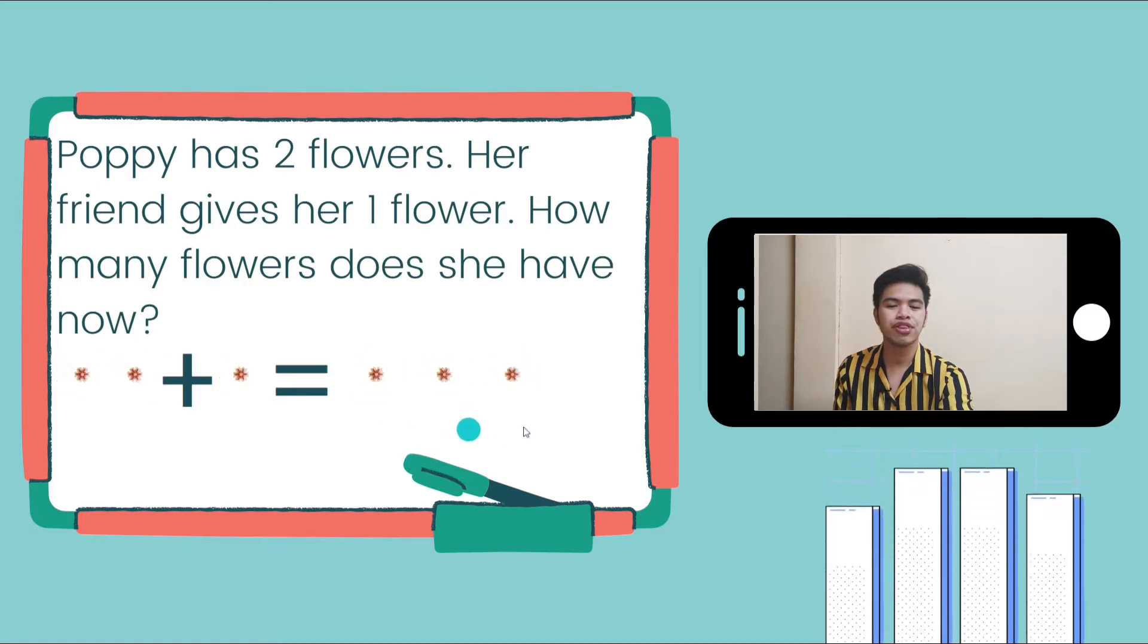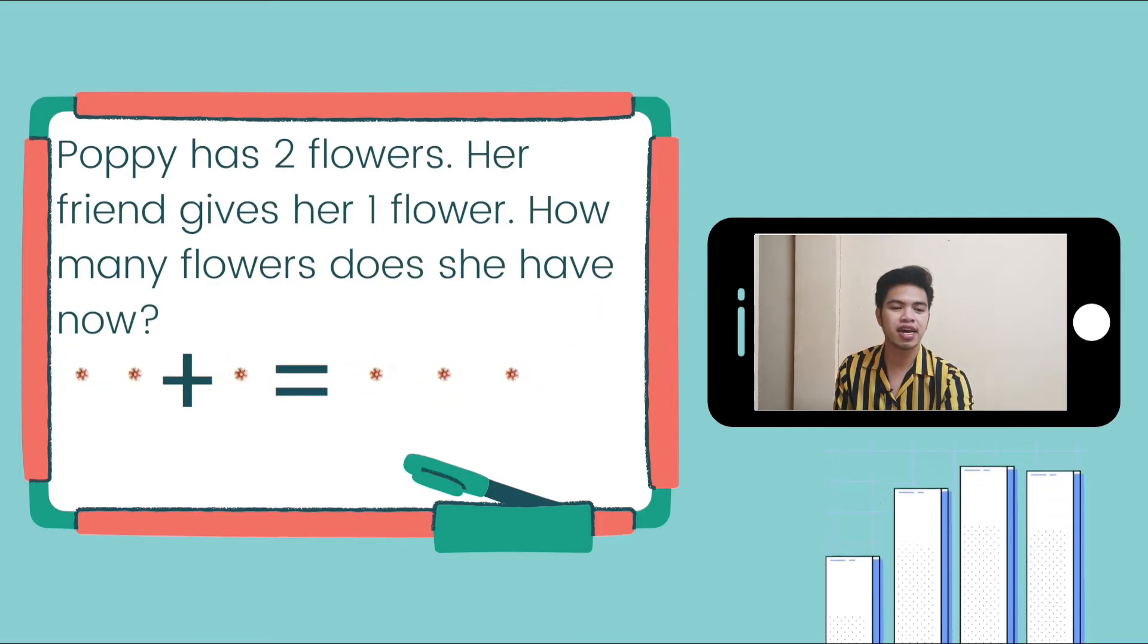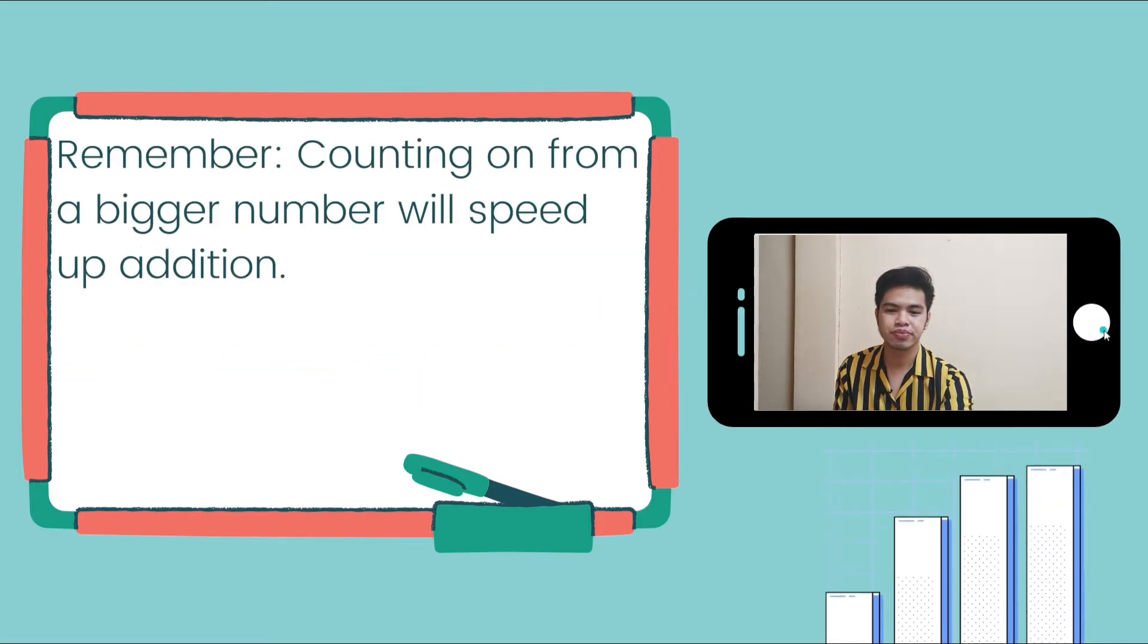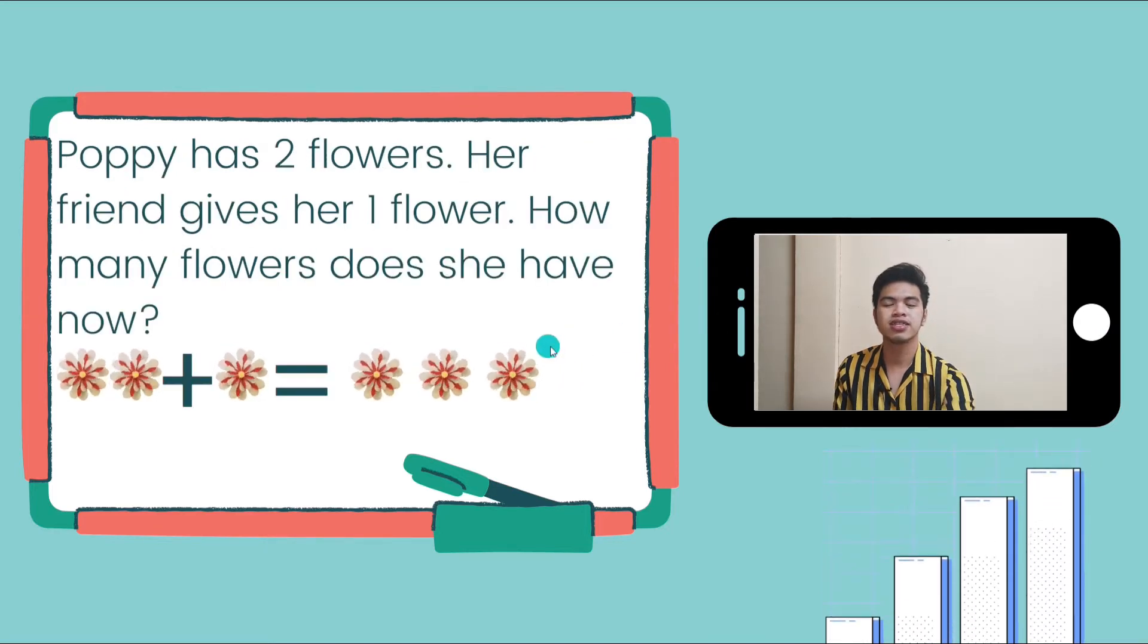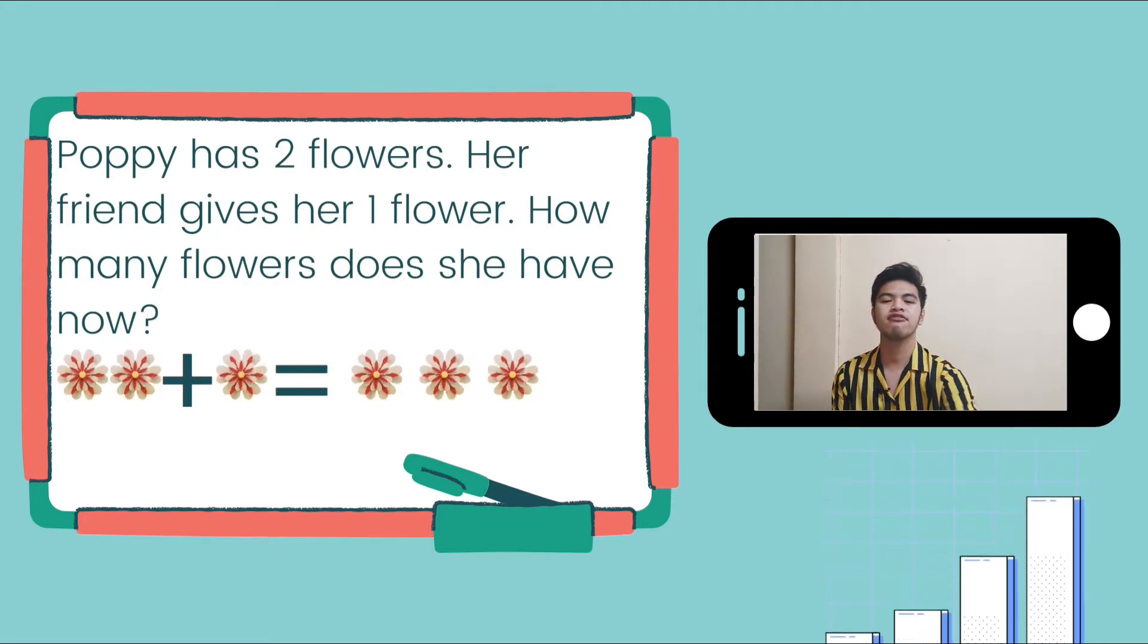We're going to count it. One, two, three. She now has three flowers. Therefore, the answer for this problem is three flowers.